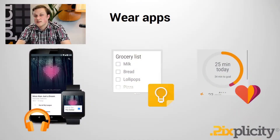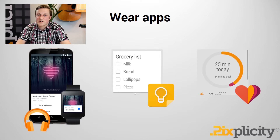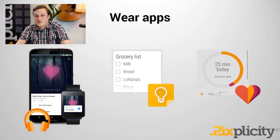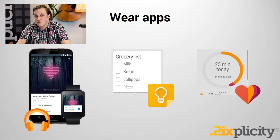Here we see a couple of existing Android Wear applications that show off how awesome Android Wear can really be. Google Play Music lets you play music offline from your watch and control it through simple interactions, so you can actually go for a run, leave your phone at home, and enjoy your music on the go using Bluetooth headphones.